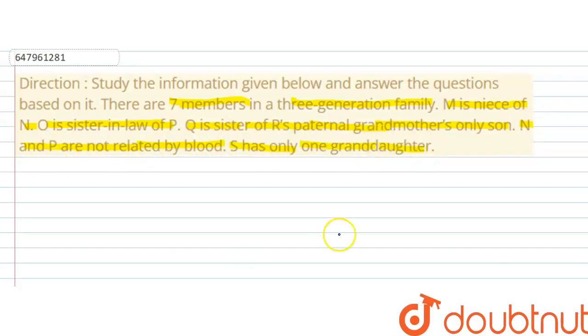This is a blood relation problem. We will use symbols here. If we use a simple line, it will represent siblings' relation - siblings means brother or sister. Spouse's relation will be represented by this arrow line. Spouse means husband or wife.